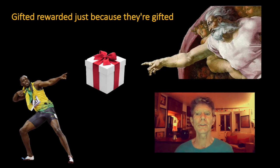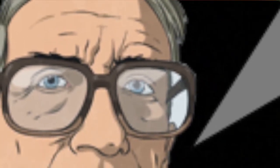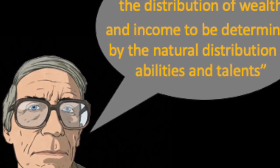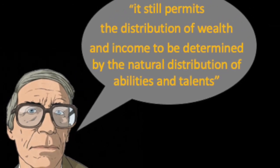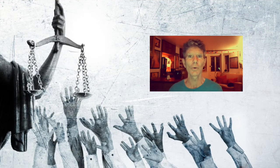Rawls goes on to argue that even people who are hardworking, with a capacity for striving — even that capacity to strive — in some senses depends on family circumstances for which they can claim no credit. What Rawls says about these natural gifts, or gifts of luck, is that it still permits the distribution of wealth and income to be determined by the natural distribution of abilities and talents. So what Rawls is saying, and it's very radical, is that virtually all the inequalities of power, status, income and wealth in our society are arbitrary and therefore unjust.